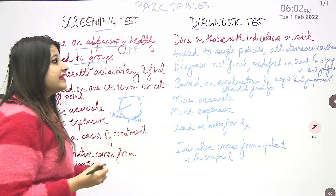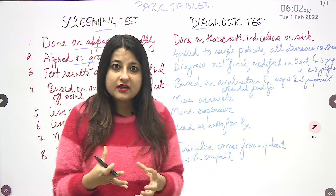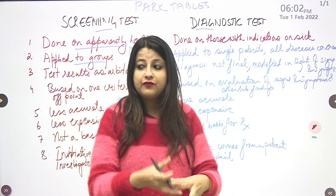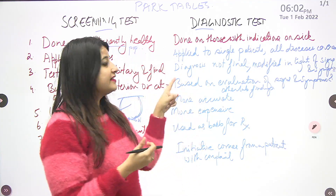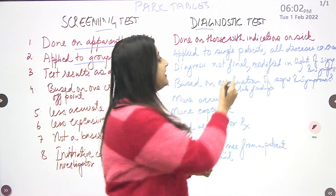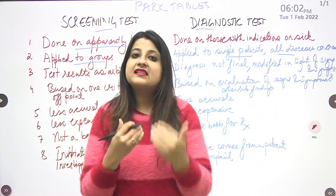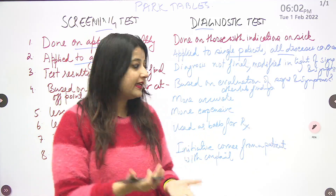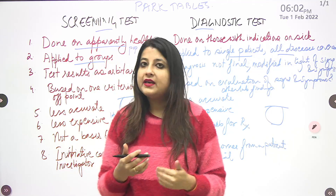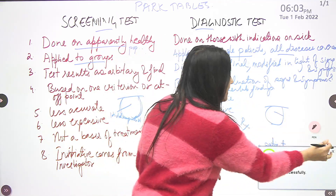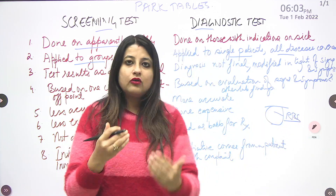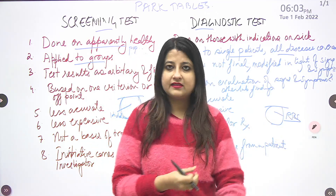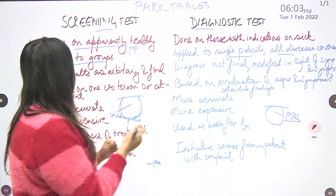Second difference: a screening test is applied to groups, because it is done on people who appear to be healthy. As epidemiologists or public health specialists, our aim is to filter out those developing the disease. A diagnostic test is done on a single patient presenting with signs and symptoms. For example, to find all those likely developing diabetes in a community, I can do a random blood sugar (RBS). Those who come positive can then be subjected to a fasting blood sugar (FBS).